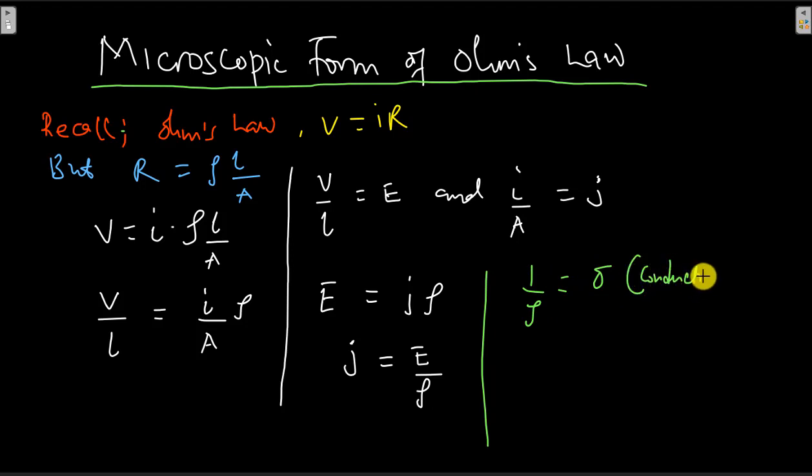So in that case, we'll have the current density J equals sigma times E, and this equation is what we call the microscopic form of Ohm's law.